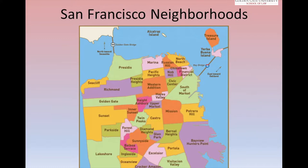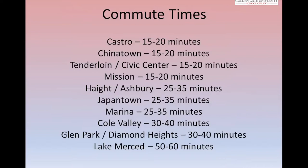One option for making rent more affordable is getting a roommate and sharing expenses. Castro, Chinatown, the Tenderloin/Civic Center, and Mission are about 15 to 20 minutes commute to Montgomery. Haight and Ashbury, Japantown, and the Marina are about 25 to 35 minutes. Keep in mind these times aren't exact — delays can occur due to medical emergencies or technical issues with the trains.